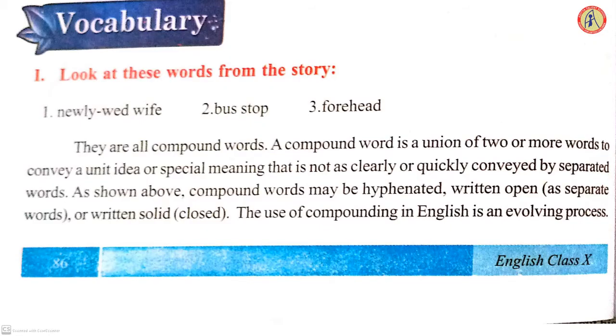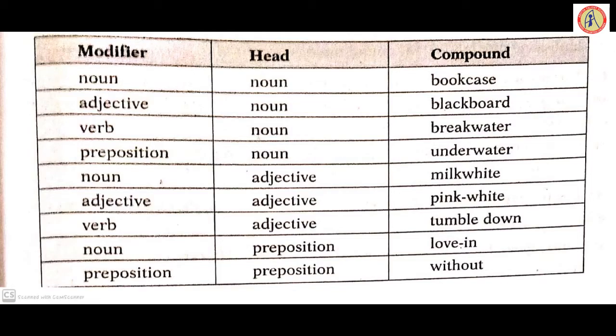So this concludes compound words. Make it very clear — there are three kinds: closed compound, open compound, and hyphenated compound. Here is a chart showing modifier, head, and compound by word class: noun + noun = bookcase; adjective + noun = blackboard; verb + noun = breakwater; preposition + noun = underwater; noun + adjective = milk-white; adjective + adjective = pink-white; verb + adjective = tumble-down; noun + preposition = love-in; preposition + preposition = without. Go through all these examples by word class.